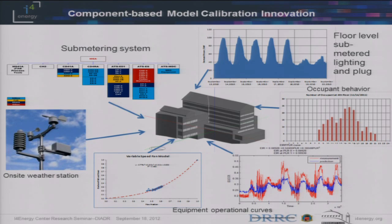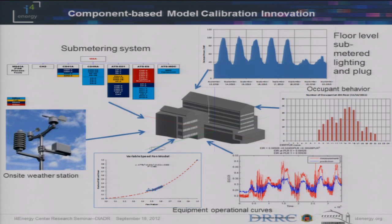The bottom two graphs show the real operational curves of the equipment — supply fans, chillers, open towers, cooling towers, and pumps. For the initial model, we had the manufacturer curves, but the real operation of those components performs differently in the building. So we took the real measured data points and fit new curves to incorporate into the model. Basically, all those components are based on what we have in the building, and that information is taken into the model.